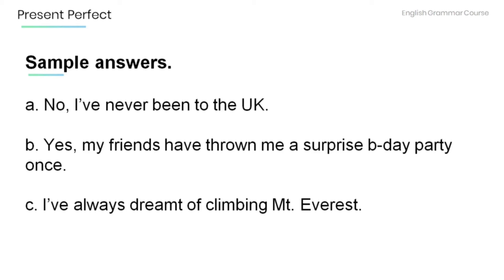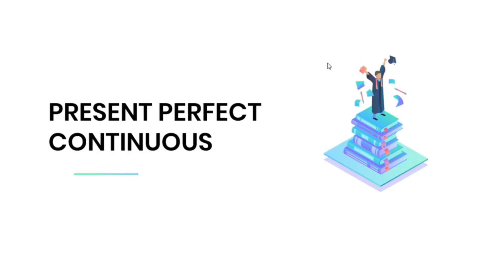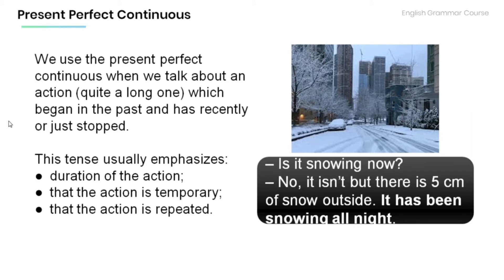Thank you for watching this tutorial. Welcome to this tutorial — today we're going to talk about the present perfect continuous. Let's get started. Now we use the present perfect continuous when we talk about an action — quite a long one — which began in the past and has recently or just stopped. This tense usually emphasizes: the duration of the action, that the action is temporary, and that the action is repeated.